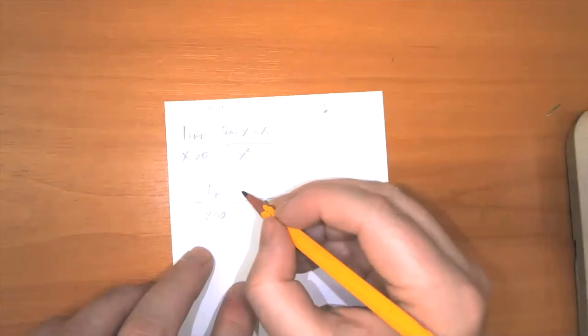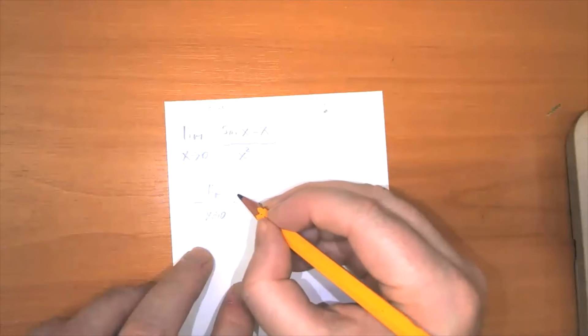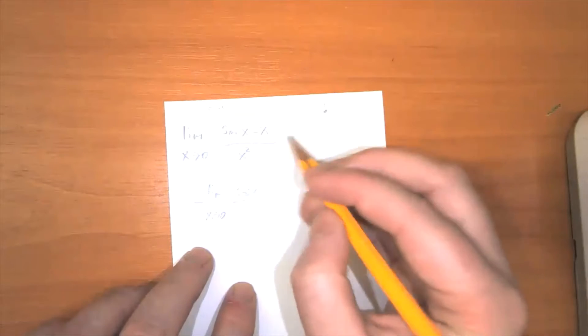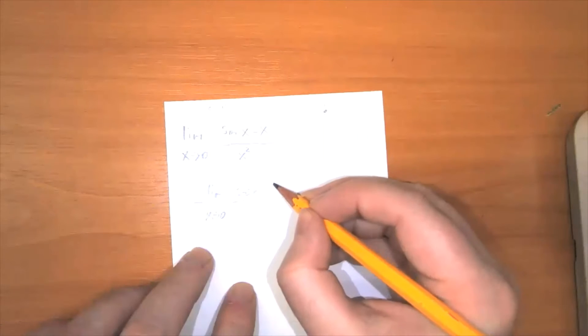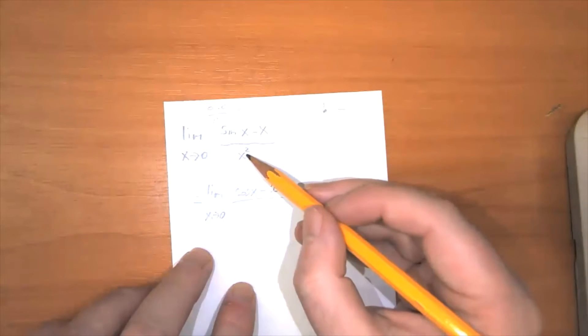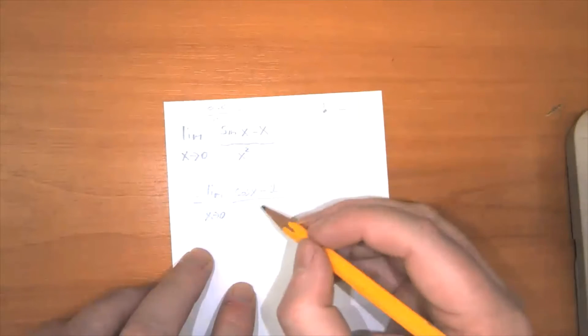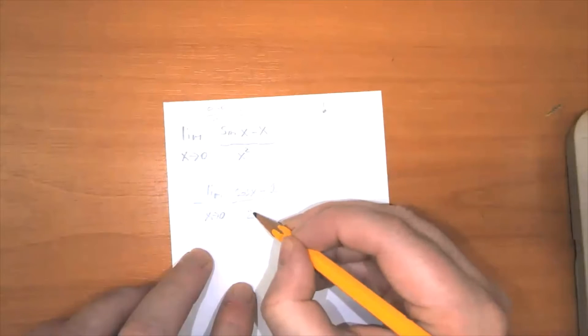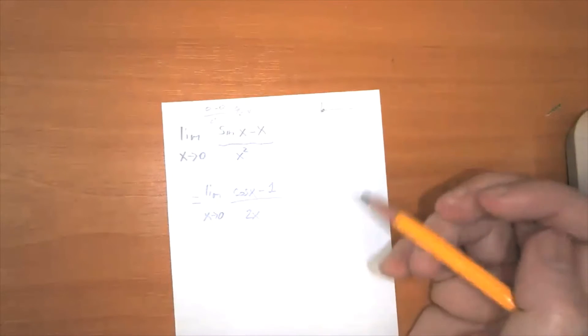Well, we'll take it term by term. Sine of x, the derivative is cosine of x. And then the derivative of x is equal to one. And in the denominator, we have the derivative of x squared, which is equal to 2x. So what's that equal to?